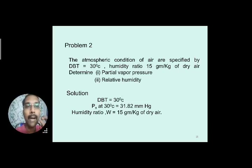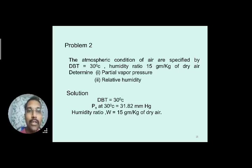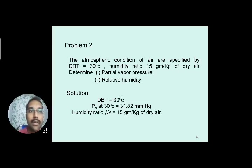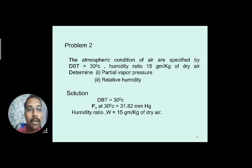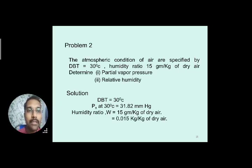Solution: Barometric pressure = 760 mm Hg. Saturation pressure at 30°C, Ps = 31.82 mm Hg. Using the formula W = 0.622 × Pv / (P − Pv), substituting W = 0.015 and P = 760 mm Hg, we solve for the partial vapor pressure Pv = 17.89 mm Hg.